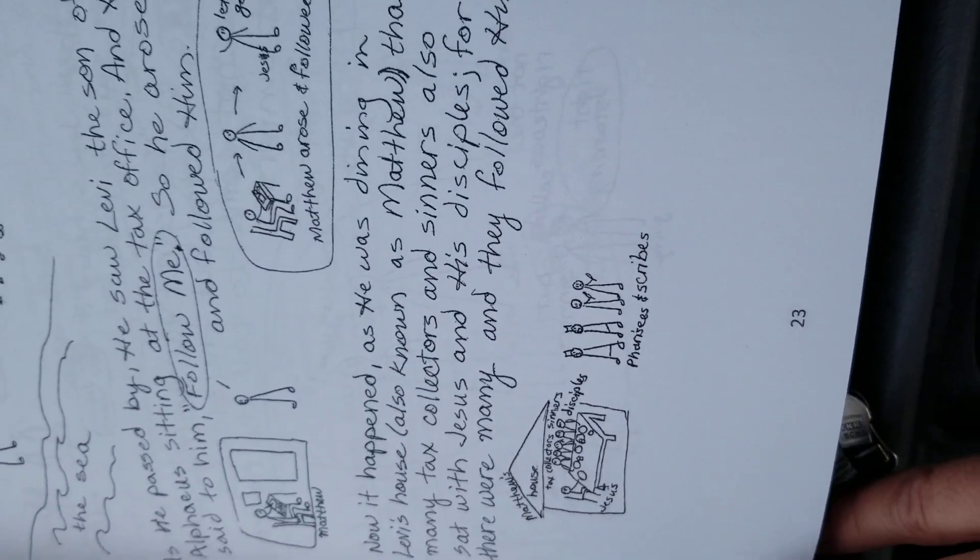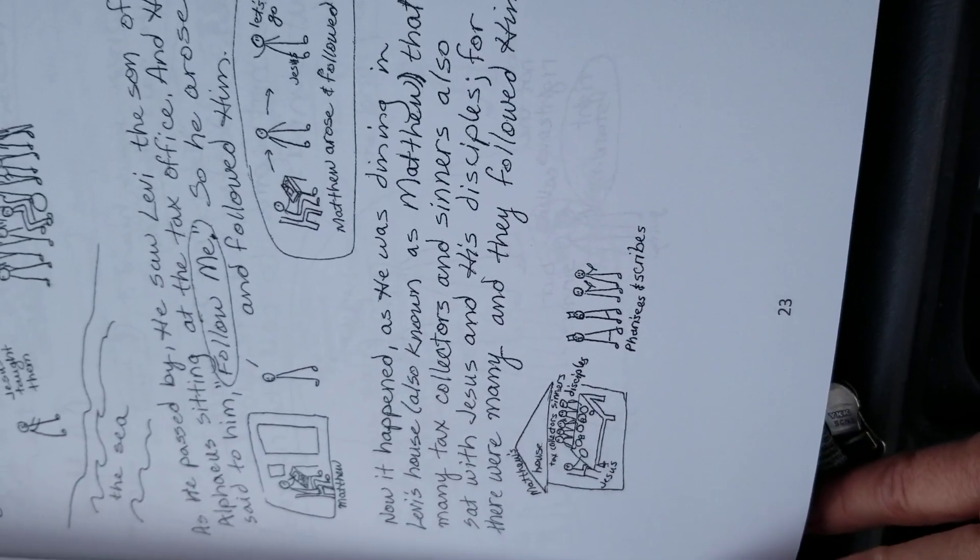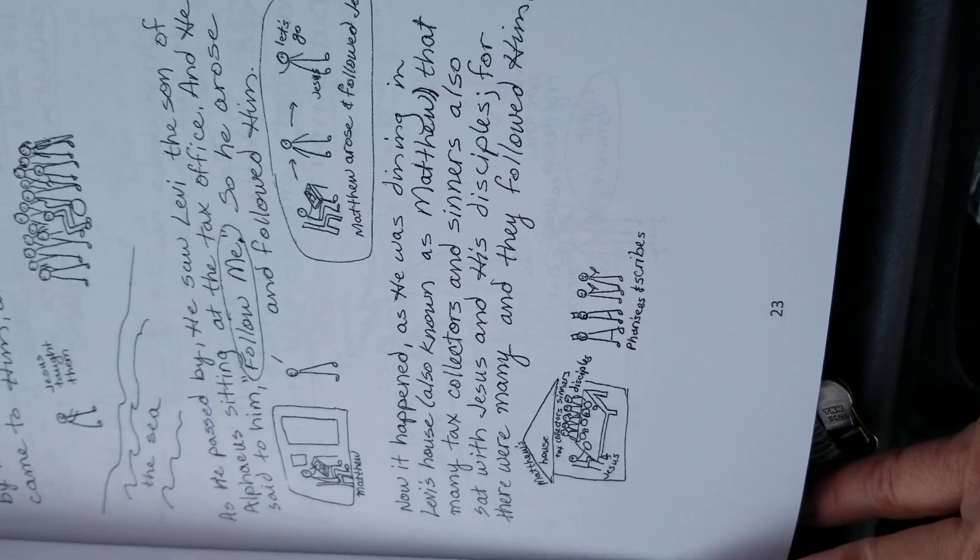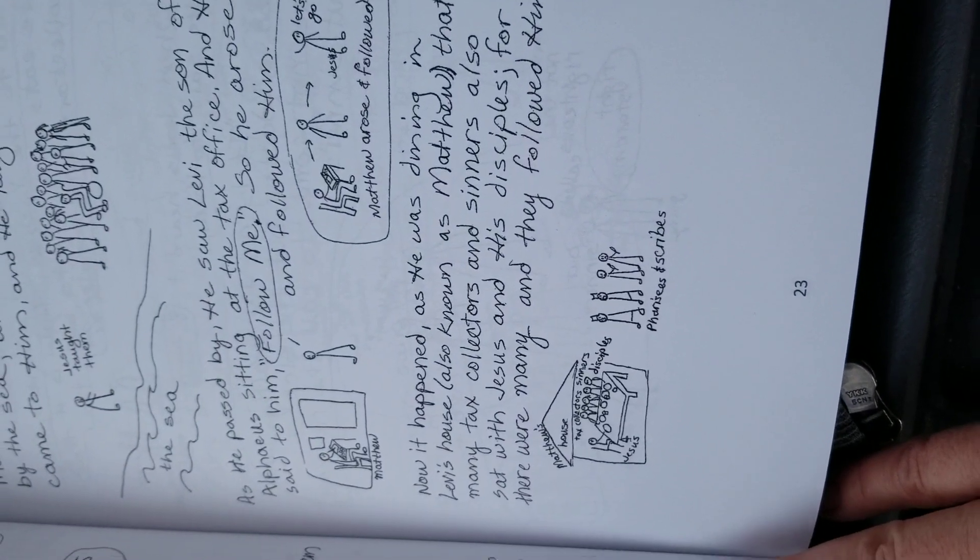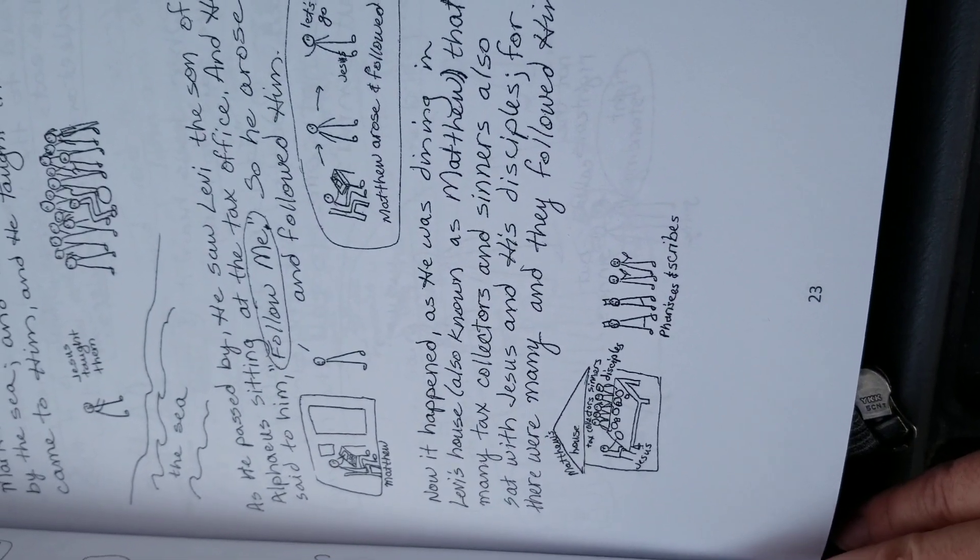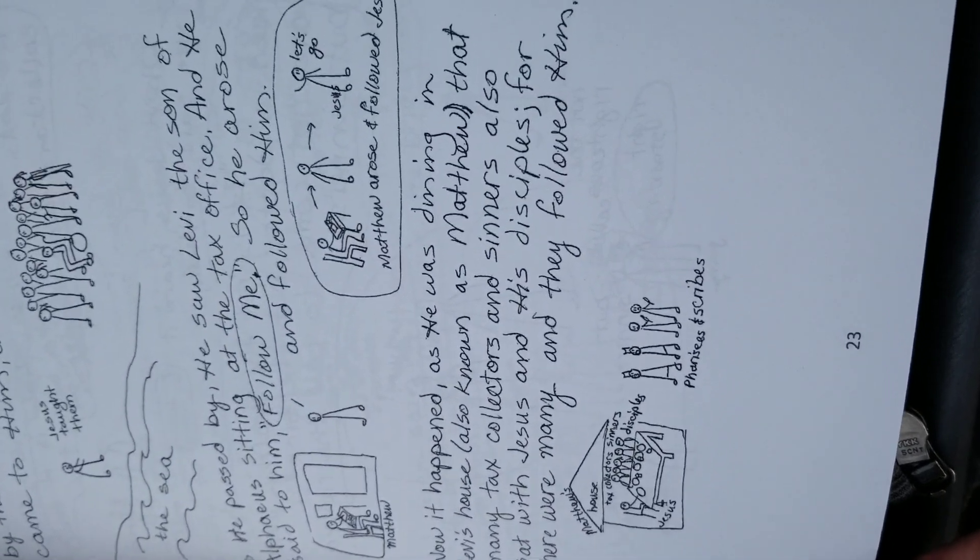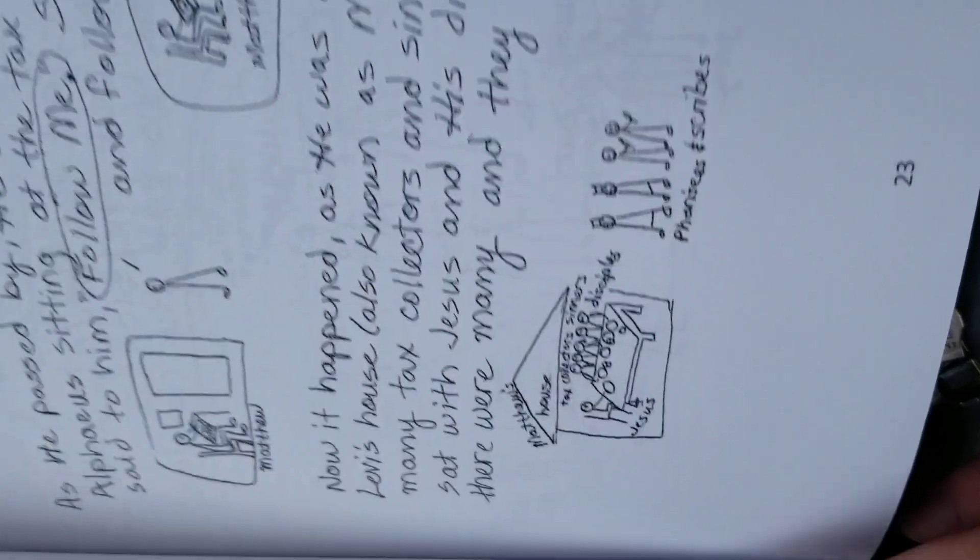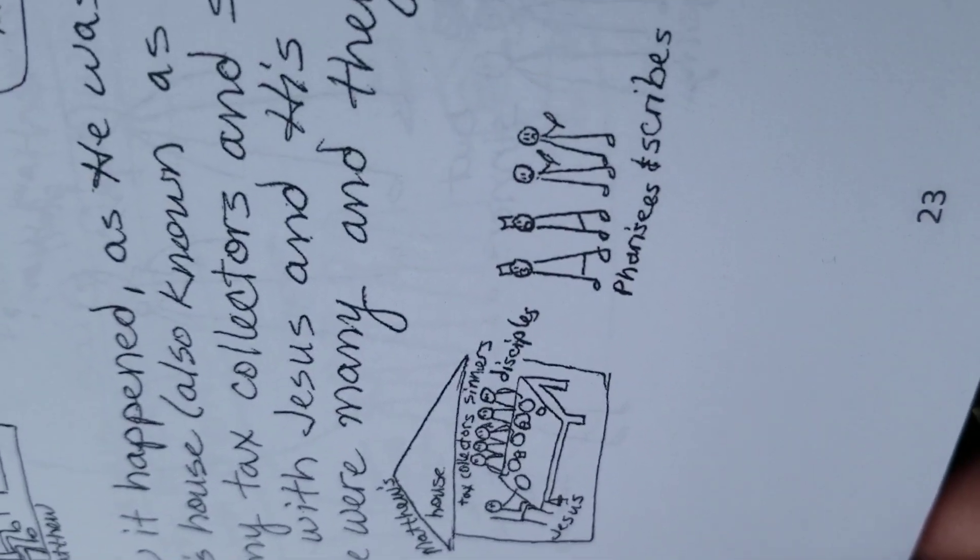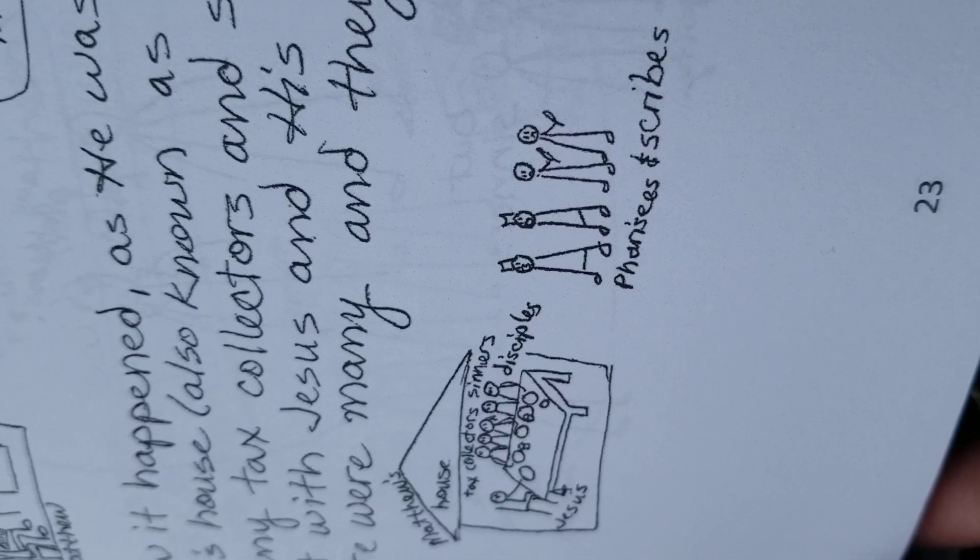Now it happened as he was dining in Levi's house, also known as Matthew, that many tax collectors and sinners also sat with Jesus and his disciples. For there were many, and they followed him. So the Pharisees and scribes, the religious leaders, are following him.